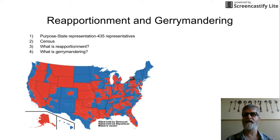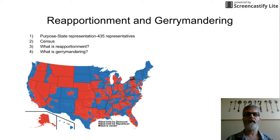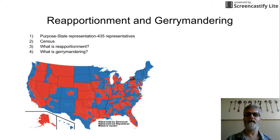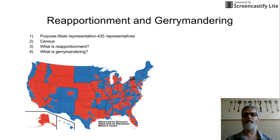Every 10 years we have a census, which is in the Constitution — in 2000, 2010, and the next census is 2020. Then we decide what states gained population, what states lost population or stayed the same. From that point, we reapportion the representatives to the different states.